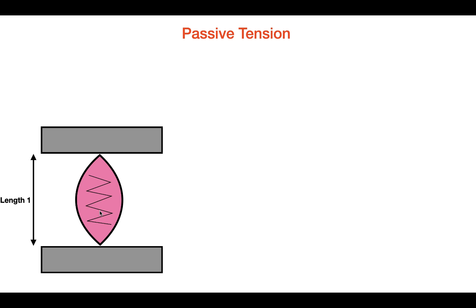Whenever you have a spring, imagine you take it and stretch it out. When you let go of that spring, it recoils back to its equilibrium position. If you were to stretch a spring out and then release it, the two ends of that spring would move back towards the center and it would return to its equilibrium position. The same can be said about a muscle — whenever you stretch a muscle out, it acts like a spring. If you were to let go of that muscle, the muscle would spring back to its original position.